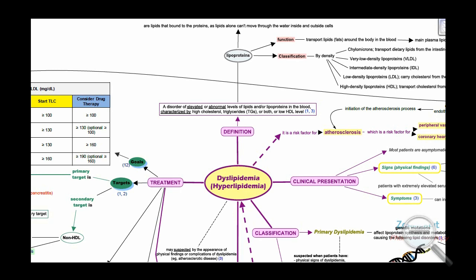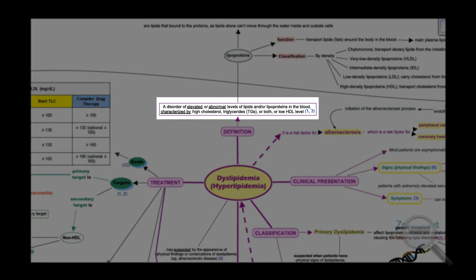The concept map of dyslipidemia starts with the definition. Dyslipidemia is a disorder of elevated or abnormal levels of lipids and/or lipoproteins in the blood, characterized by high cholesterol, triglycerides, or both, or low high-density lipoprotein level.